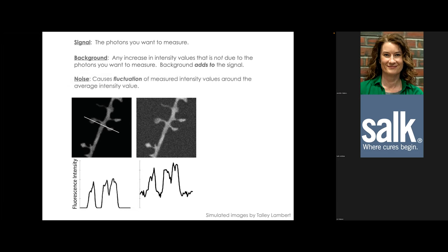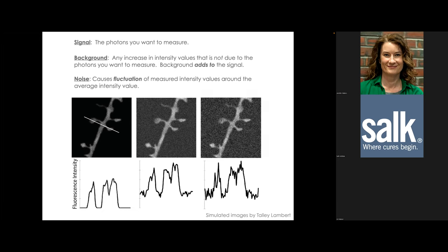Noise is different from background — it's a fluctuation in intensity values across pixels. You cannot subtract noise the way you can subtract background, because noise is a variance, not a constant offset. When noise is added to a simulated image, we see greater fluctuation in intensity values across the line scan.